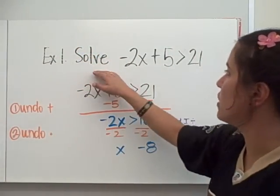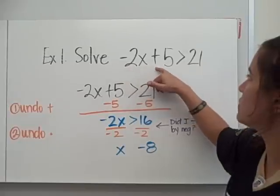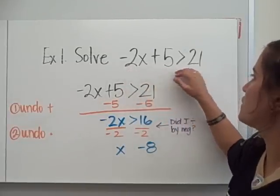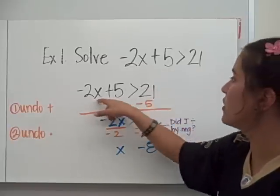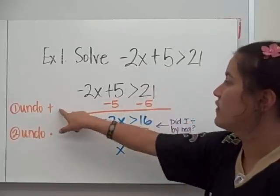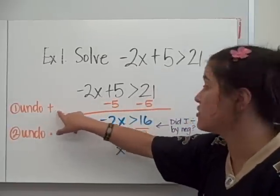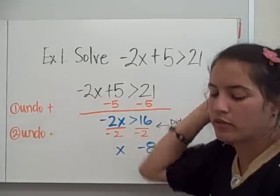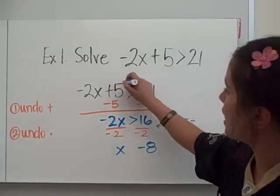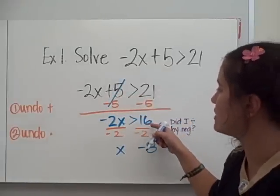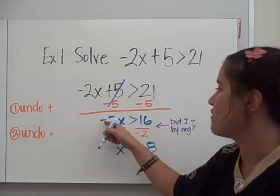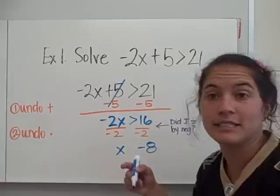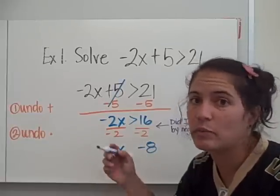Okay, example number one — solve. Negative 2x plus 5 is greater than 21. So I rewrote the problem, and the very first step is we want to undo the addition. We have addition right here. So I've shown you the subtraction property of equality, where I'm going to take away 5 from both sides. 21 minus 5 is 16. So now I have negative 2x is greater than 16. I did not switch my inequality symbol because I didn't multiply or divide.